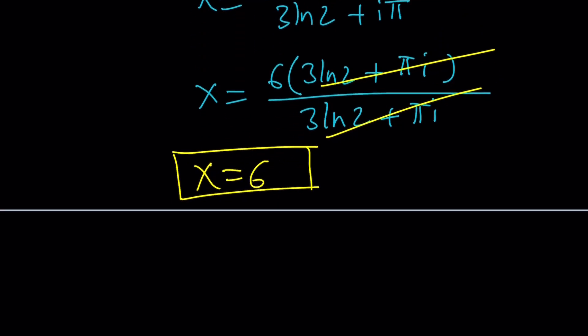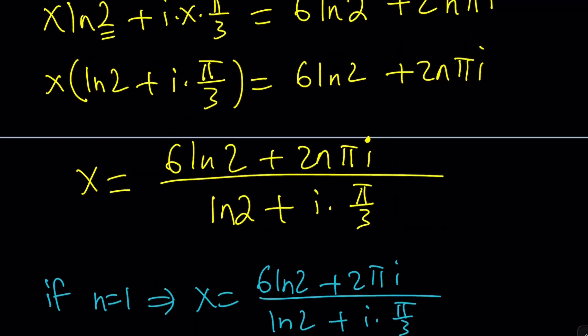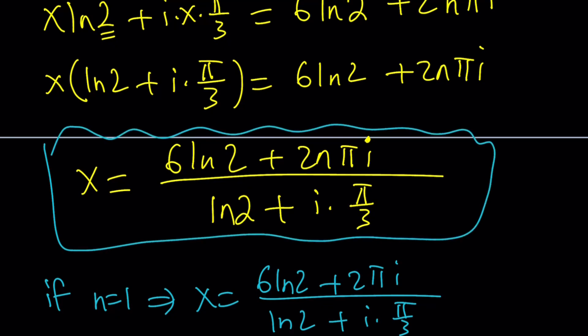But anyways, so if you go ahead and do this, I could probably write in different ways. One plus i root three to the sixth power, you should be getting 64. And of course, this is the general solution, needless to say, but for particular values, we get at least an integer solution.